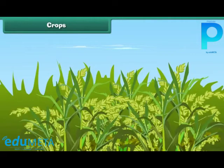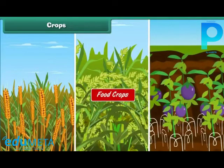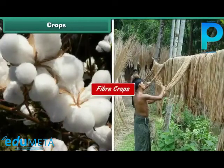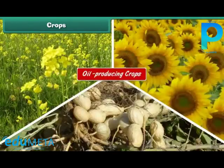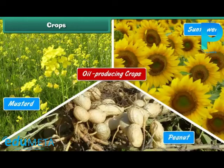Crops: Several plants which are grown in fields by farmers and are useful in various ways are known as crops. Crops are mainly of three types: food crops (e.g. wheat, rice, and vegetables), fiber crops (e.g. cotton and jute), and oil-producing crops (e.g. mustard, sunflower, and peanut).